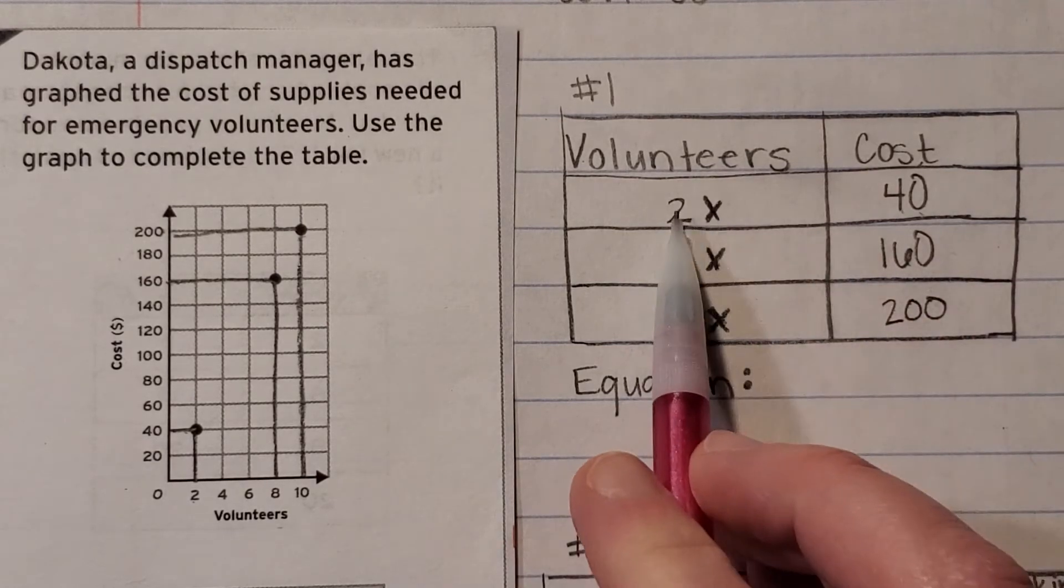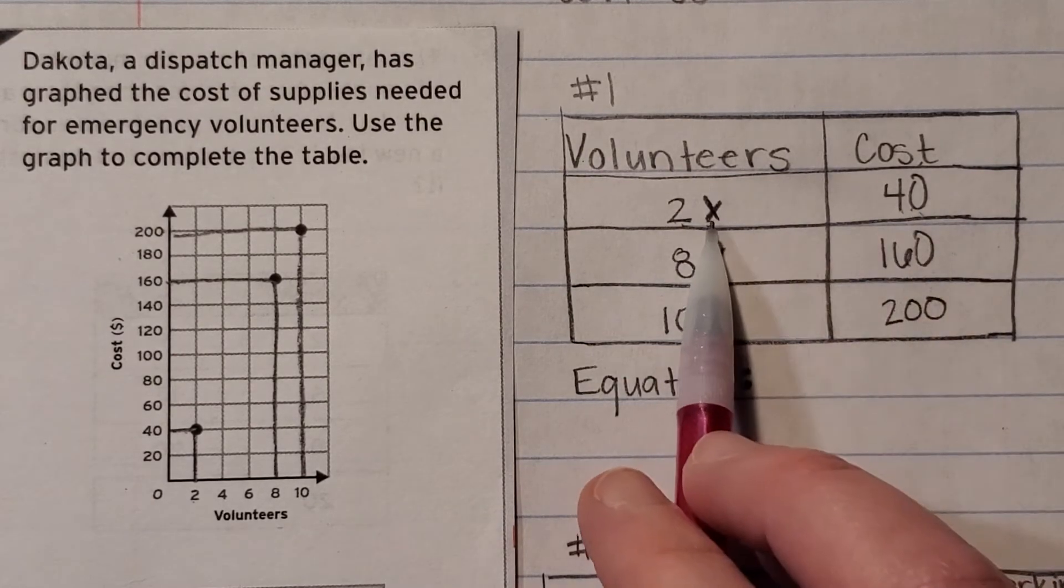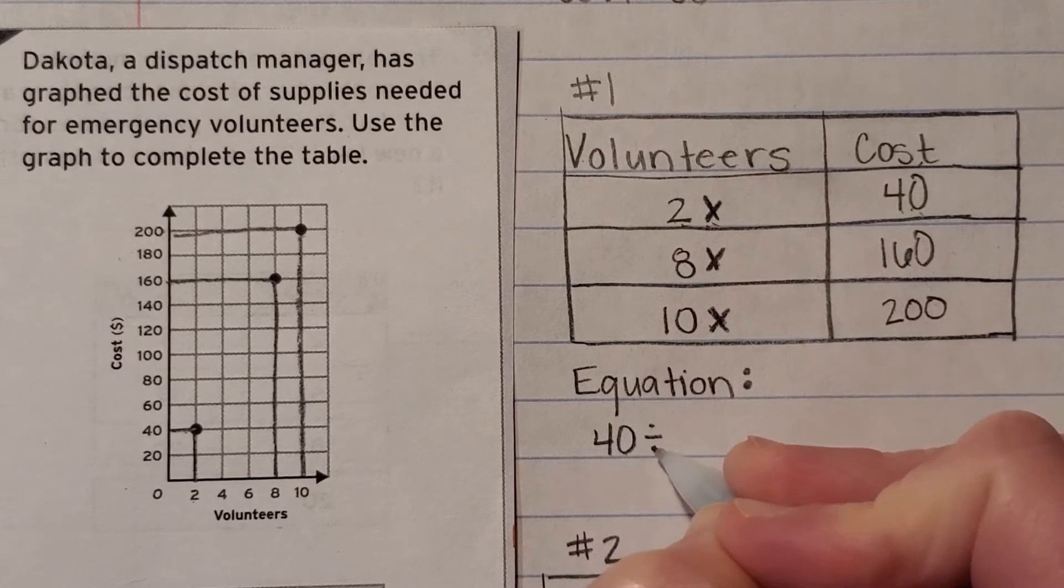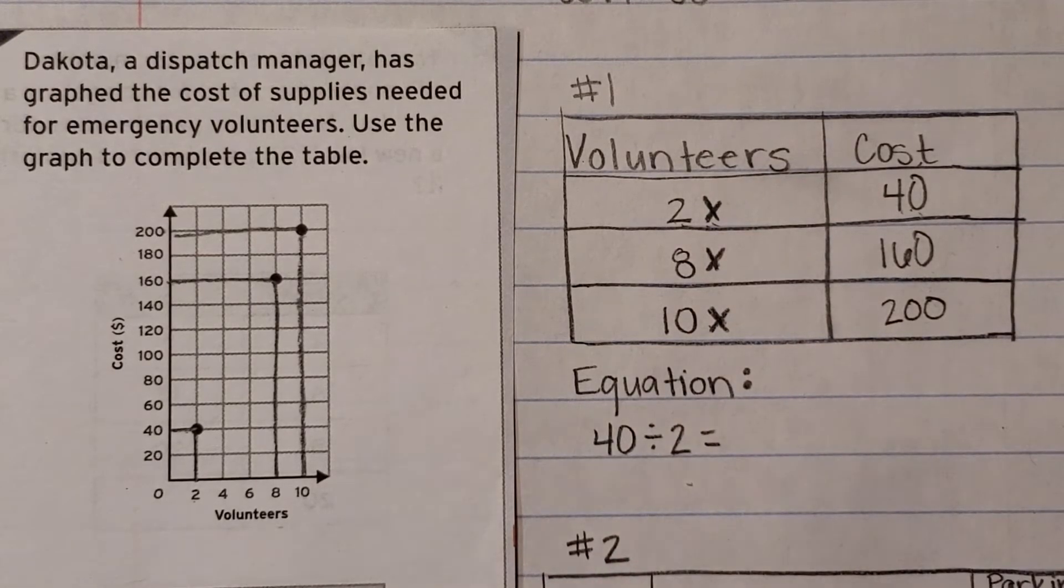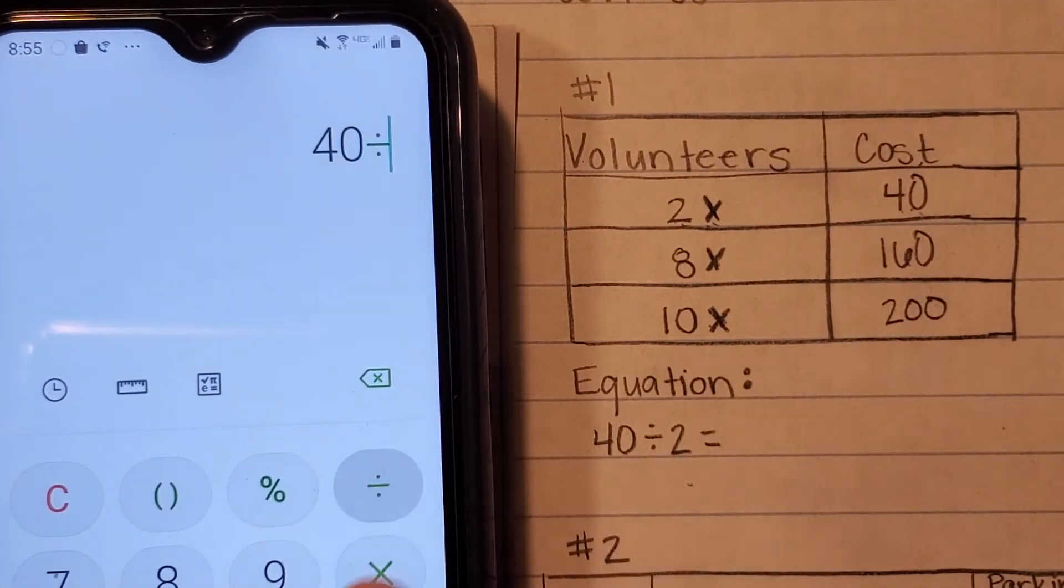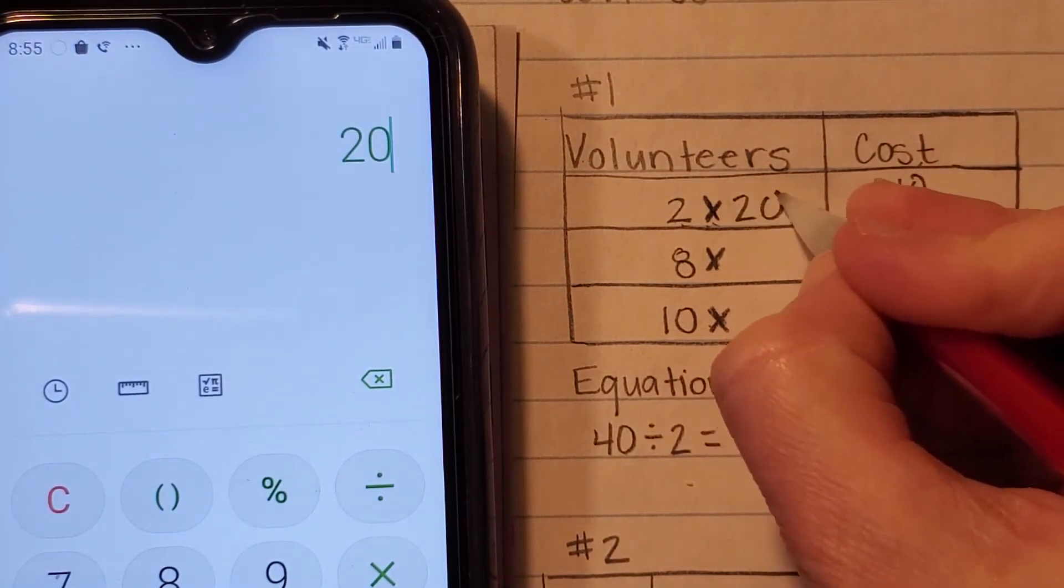Now I've got to figure out what do I multiply two by to get to forty. Once again if I'm not for sure I can use that inverse operation, the opposite or inverse of multiplication is division. So I'm going to go ahead and take forty divided by two. Go ahead and plug that into your calculator. If you are not for sure what forty divided by two is, I'm going to pull up my calculator. So let's take forty divided by two and I get twenty. So two times twenty is forty.